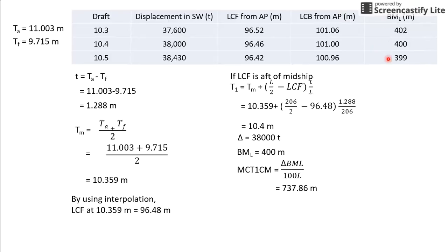So you'll take 400 meters × displacement / (100 × L), and you'll get your MCT1cm to be 737.86 meter-tonnes.